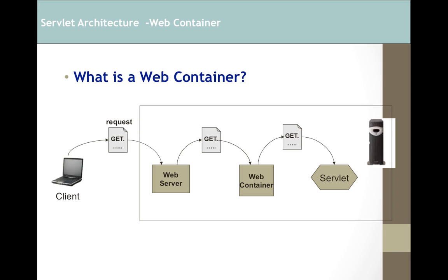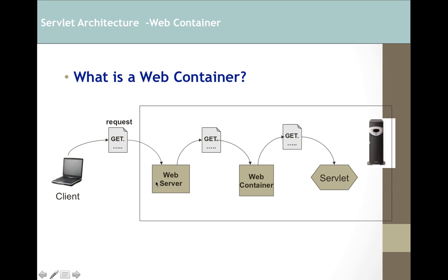You get the web container from Apache Tomcat or Glassfish — there are many container options. All containers are part of a web server; Apache Tomcat is a web server, while Glassfish is a combination of web server and app server. When you send a request, it goes to the web server, which forwards it to the web container based on the servlet name. The web container is responsible for calling the particular servlet that generates the page.